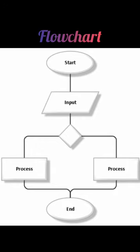A flowchart is a common type of chart that represents an algorithm or process, showing the steps as boxes of various kinds and their order by connecting them with arrows. Flowcharts are used in analyzing, designing, documenting, or managing a process or programs in various fields.